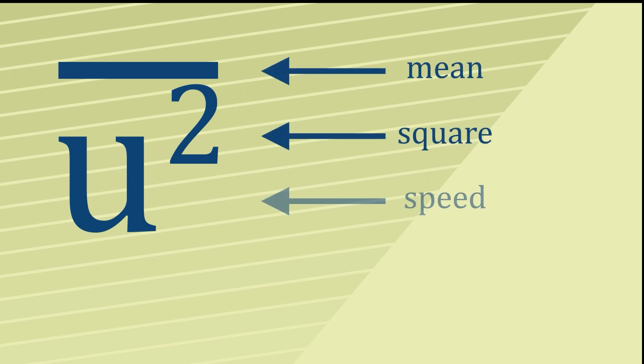To solve this rather significant problem, we're going to introduce something called the mean square speed. As you can see, this is written u for speed, square for square, with a bar over the top to indicate that it's the mean.